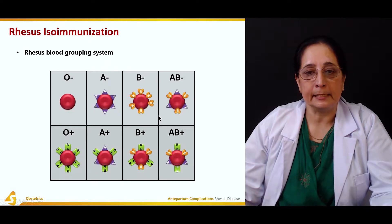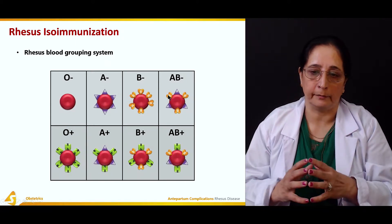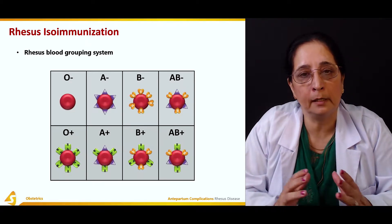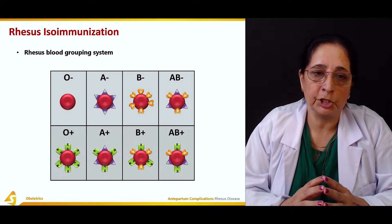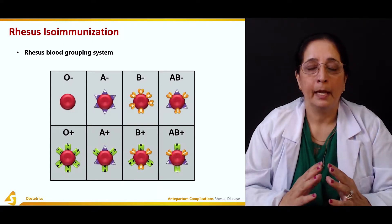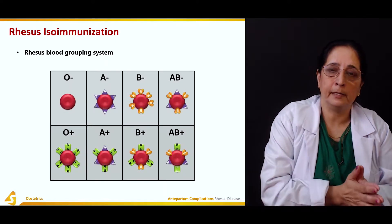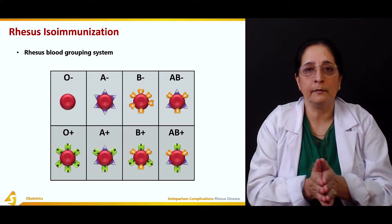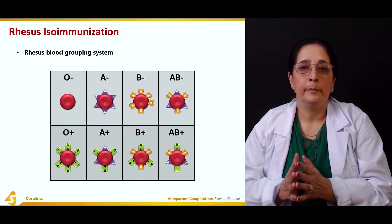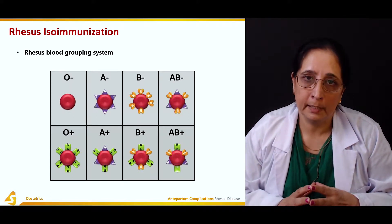B negative means no Rh factor — it has only B antigens present on the blood surface. B positive has Rh factors along with the B antigens. AB negative has no Rh factor but has both A and B antigens on the surface. AB positive has Rh factors along with A and B antigens. This is the Rhesus blood grouping system, which tells whether a person has blood group A positive, B positive, AB positive, or O positive, because they have the Rh factor present on the surface of their red blood cells.